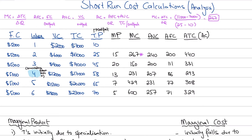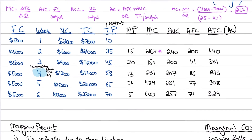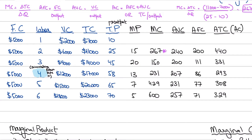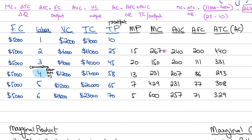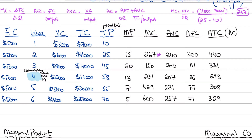First, let's see how I calculated the marginal cost. Marginal product is the extra output contributed because of hiring an extra worker. The extra output is 15, and the marginal cost is 267. It is simply the change in total cost divided by the change in quantity of output. Total cost rises from $7,000 to $11,000 and output rises from 10 to 25 — so we produce 15 extra units. The additional cost incurred per unit is 267, representing the additional cost when we produce another unit.